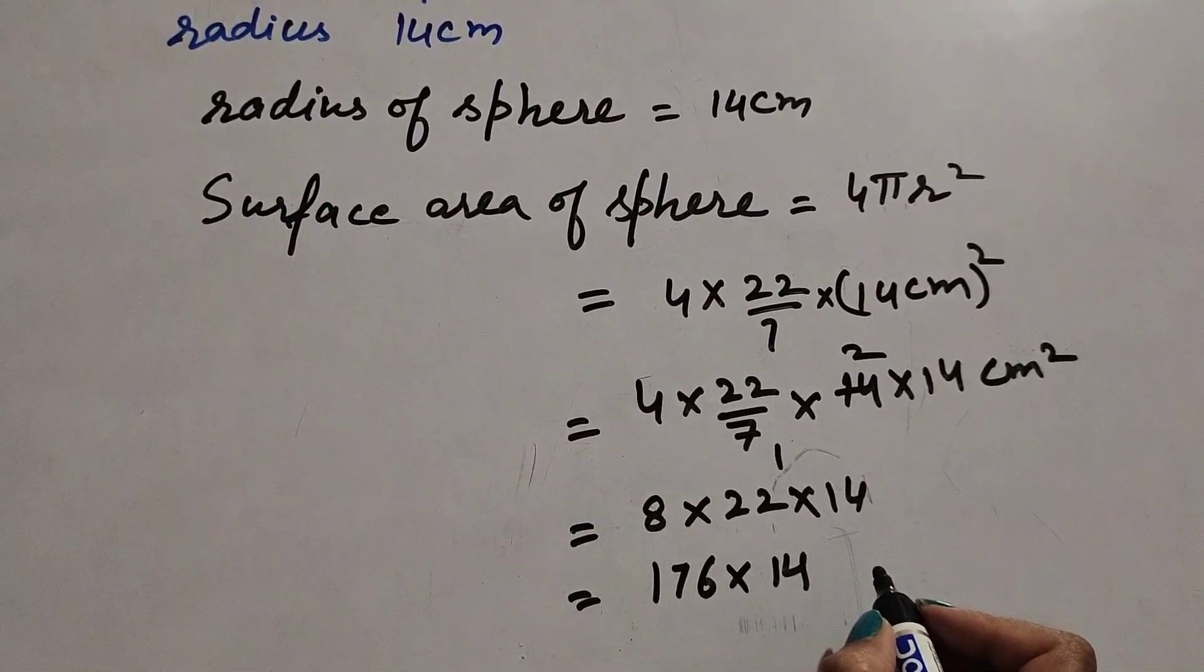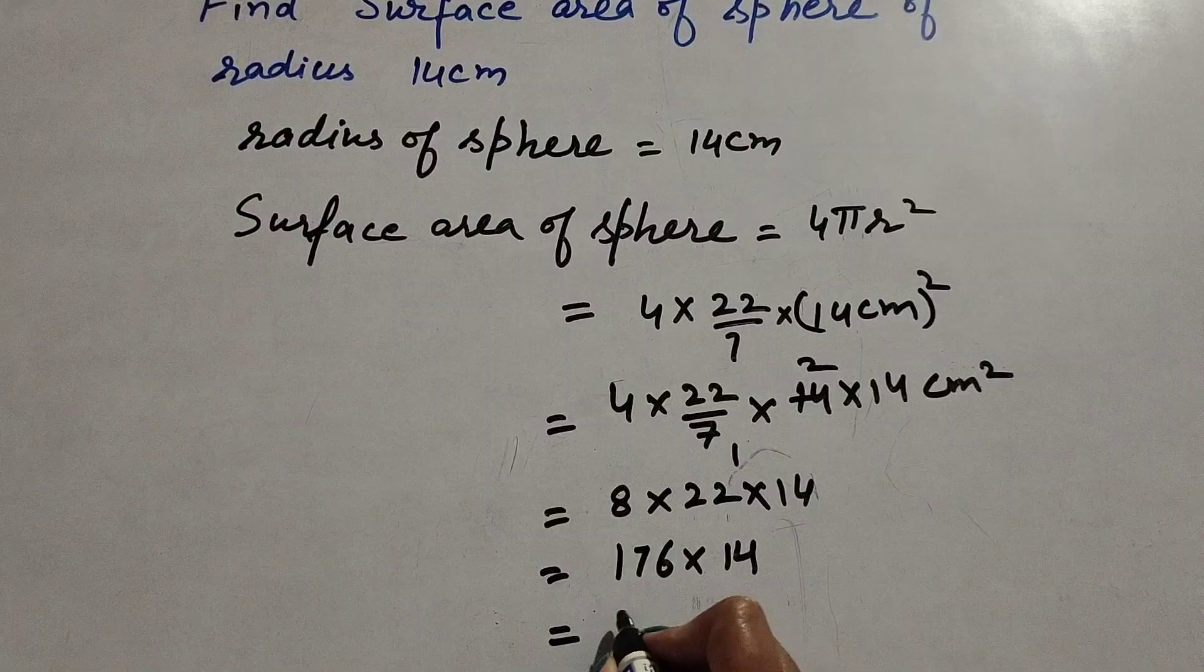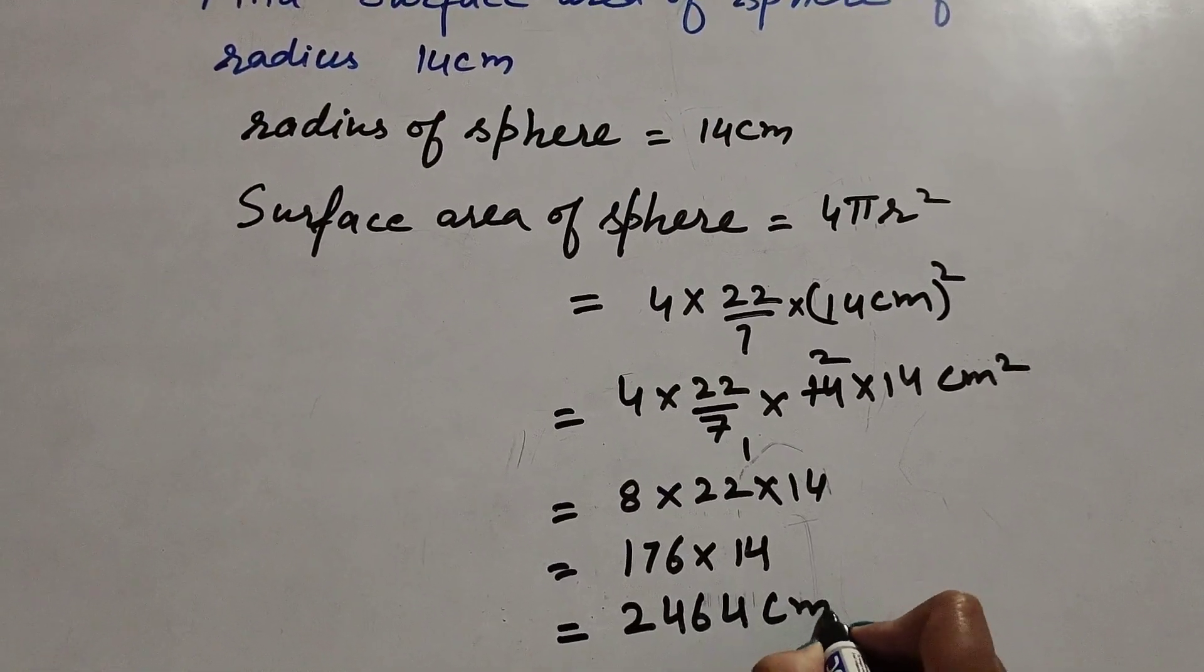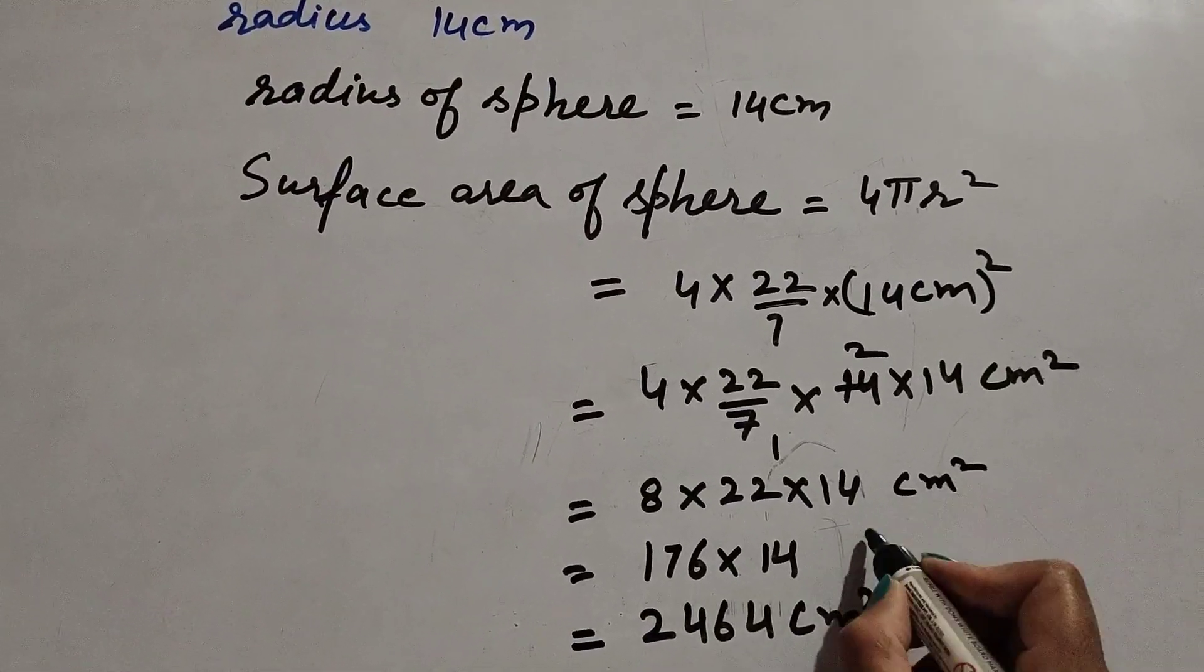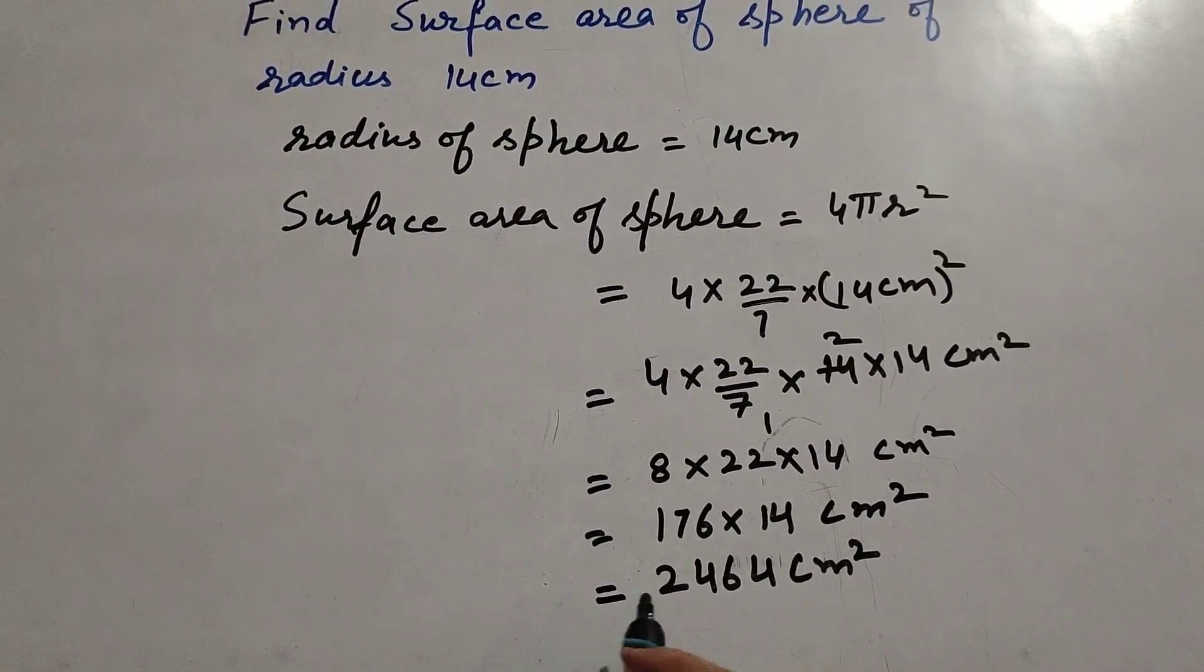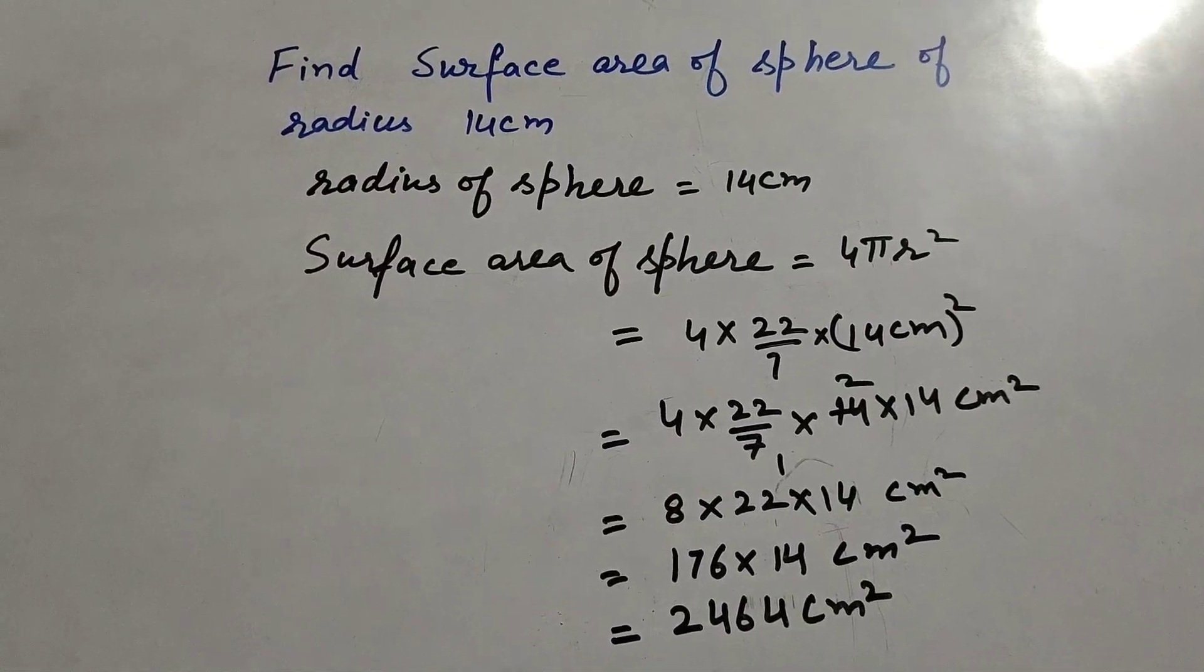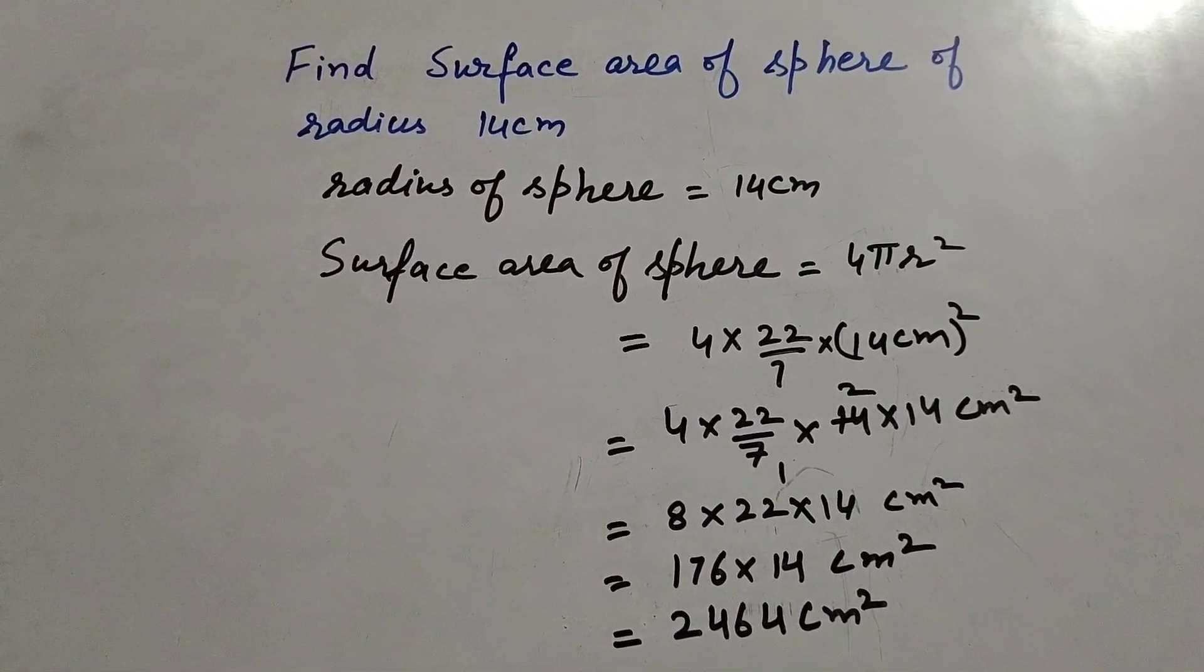176 × 14 gives us 2464 cm². So the surface area of the sphere is 2464 cm². Thanks for watching, please like, comment and share my video. Subscribe to my YouTube channel. Thank you.